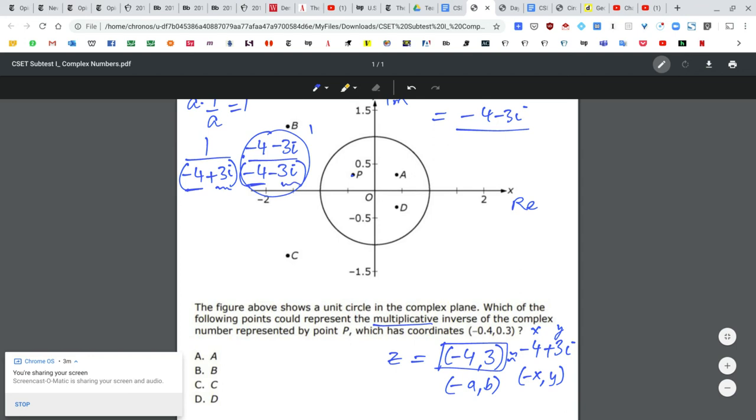The only difference between these two guys is the middle sign. The middle sign has flipped. So it's negative 4 plus 3i, negative 4 minus 3i. So we can actually do difference of squares, so that's faster. Negative 4 squared minus 3i squared.